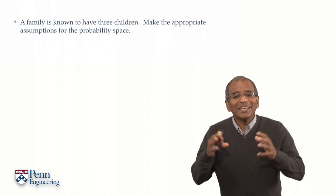Let's look at a slightly more complex example, this time dealing with families. Here's an experiment. Imagine that a family is known to have three children. Begin by making the appropriate assumptions for the probability space.